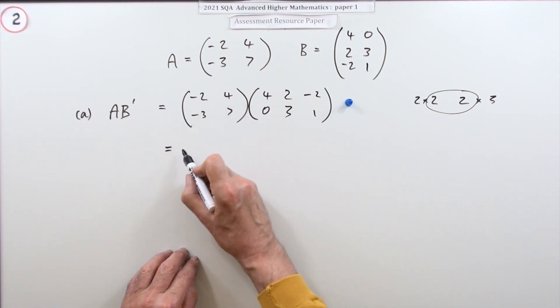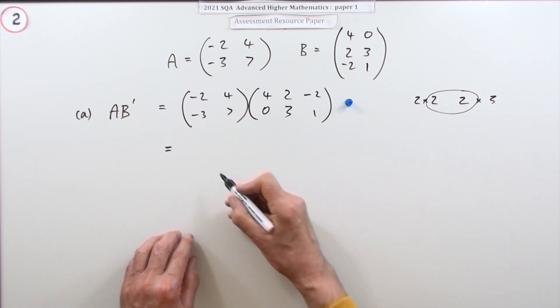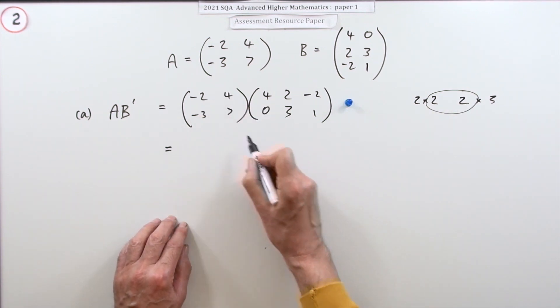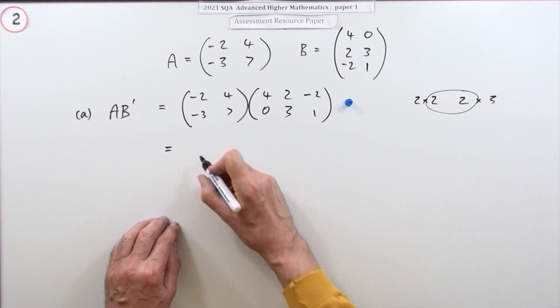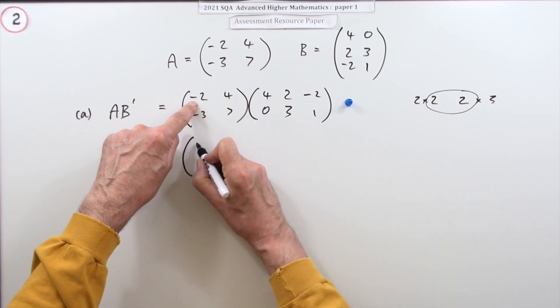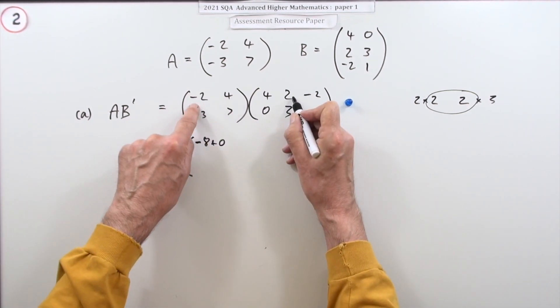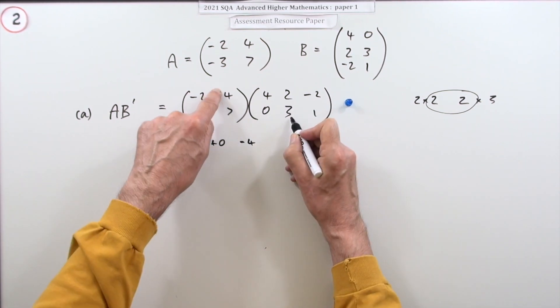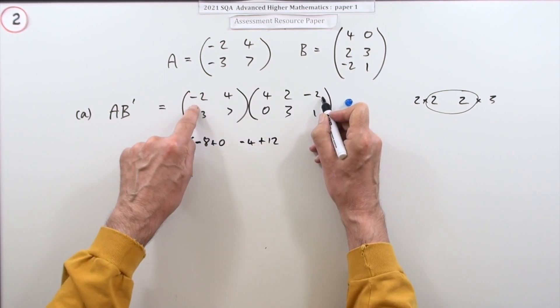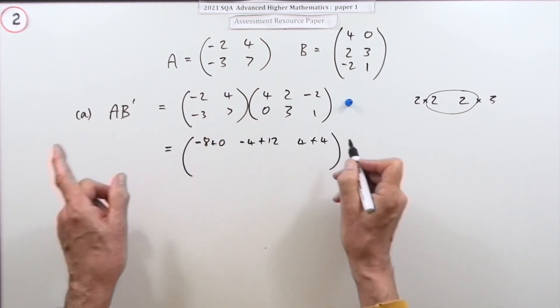Now the first row gives the first row answers, and of course that answer will be the outside 2x3. So what have you got? I'll just show all: -2 times 4 is -8, 4 times 0 is 0, -2 times 2 is -4, plus 12, plus 4, plus 4. Of course there's no marks for all the micro arithmetic.